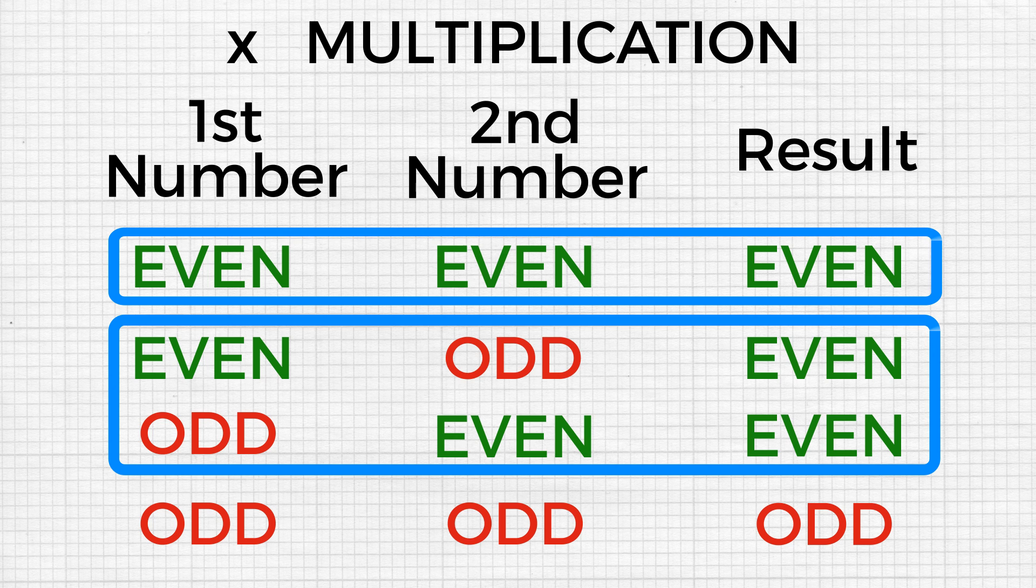As long as one of the two numbers is even, the result will always be even.